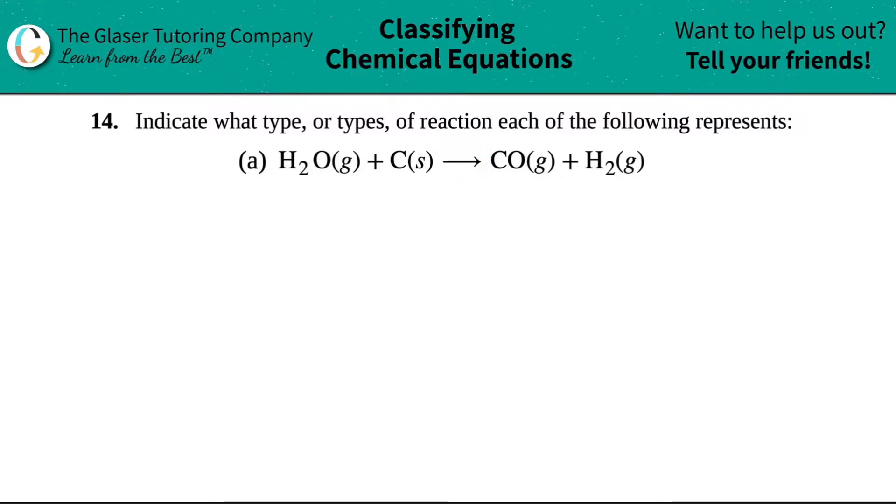It will produce or yield CO which is a gas, plus hydrogen gas. Hydrogen is diatomic - it can't exist by itself. Let's see what's happening with colors.